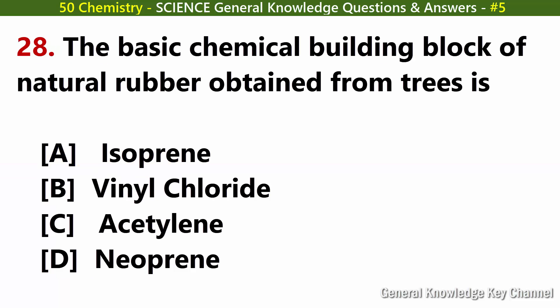The basic chemical building block of natural rubber obtained from trees is. Answer A: Isoprene.